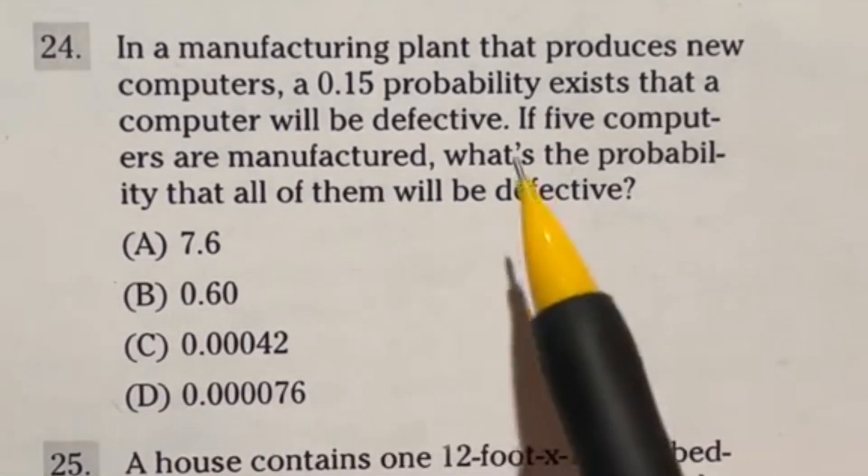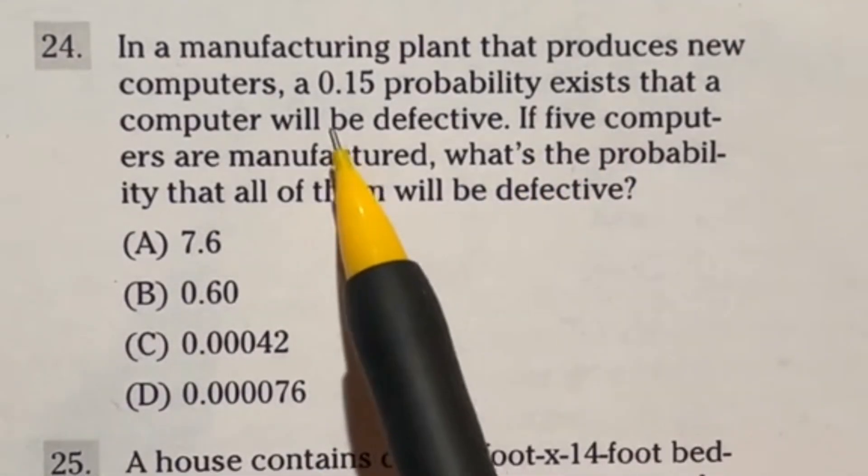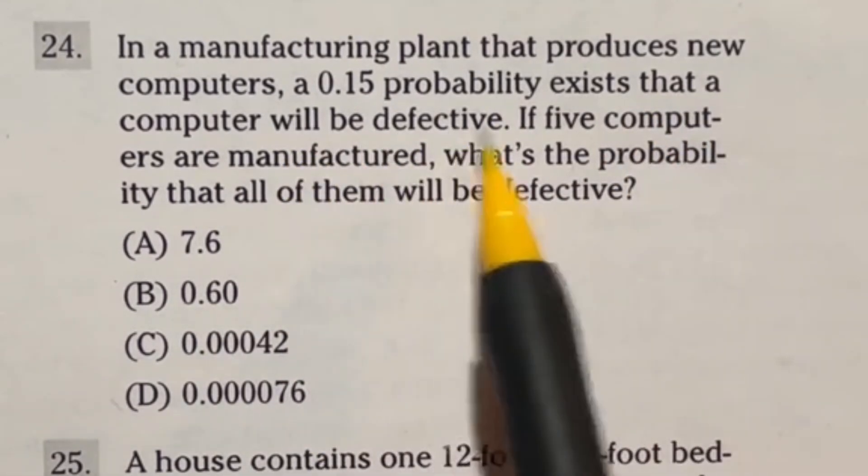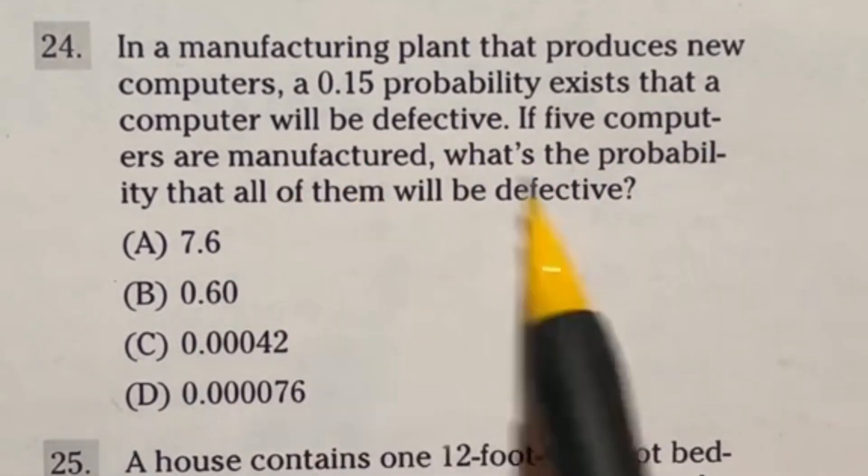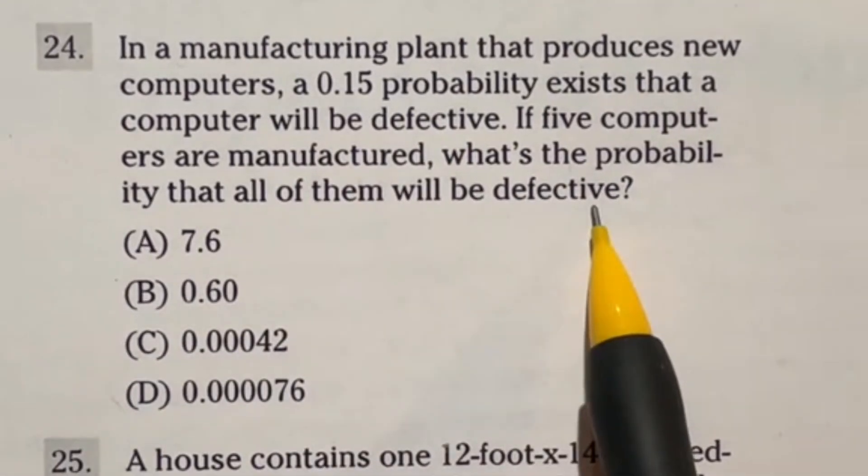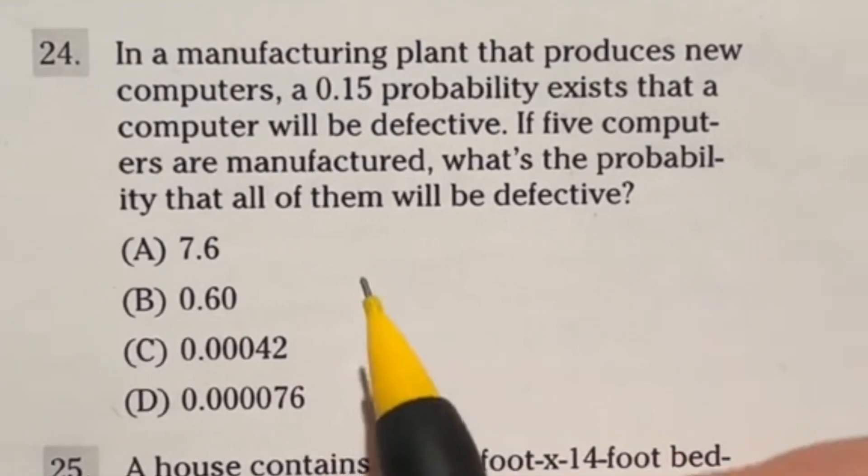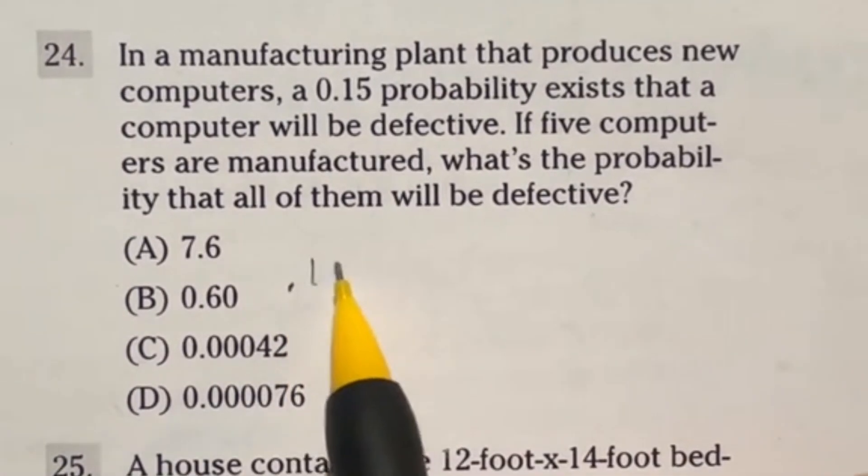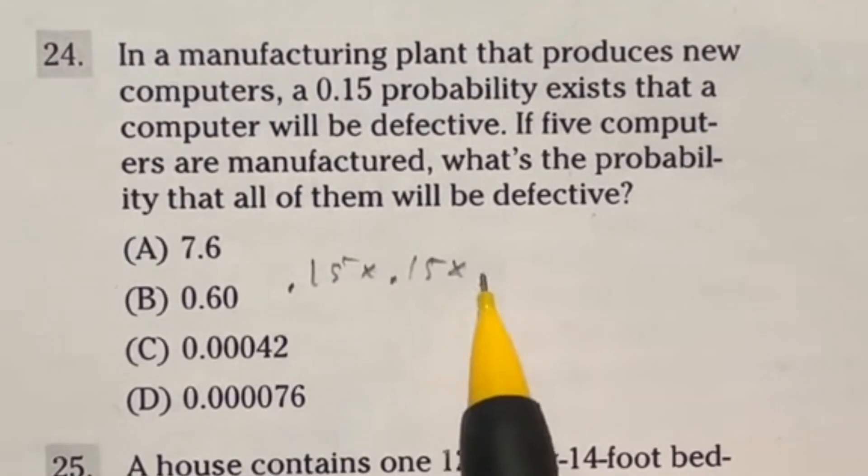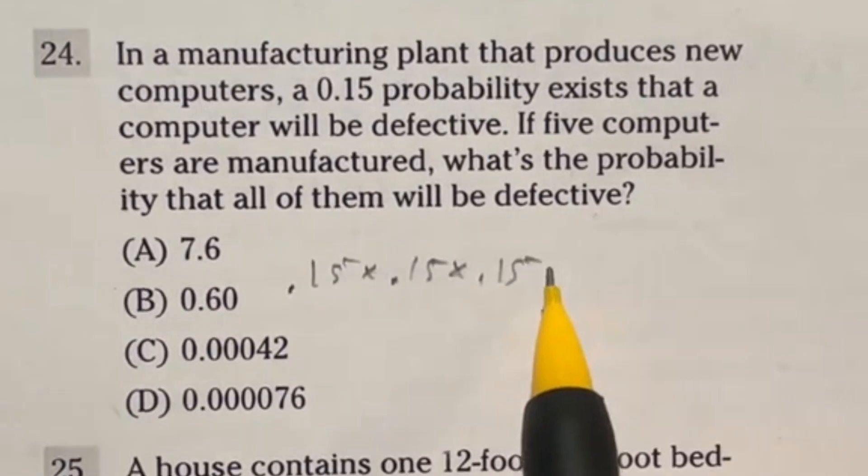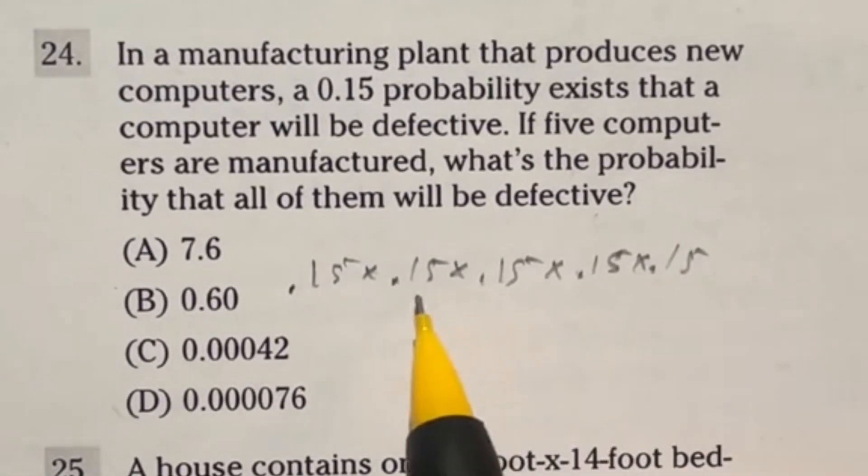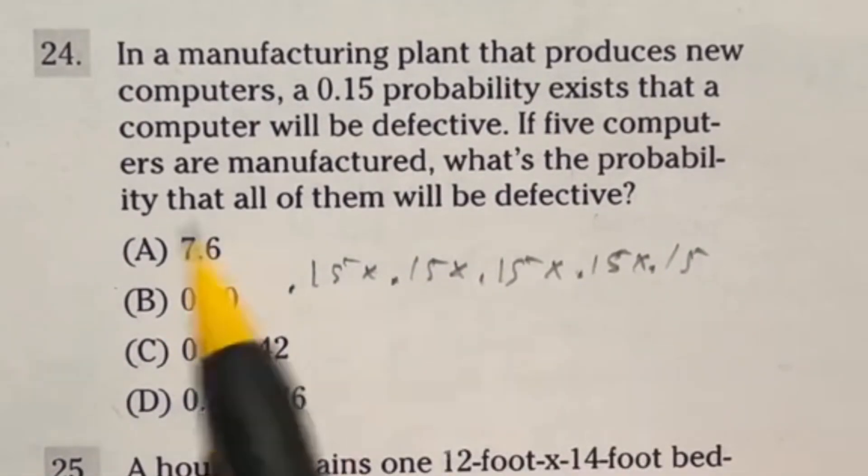Number 24 says in a manufacturing plant that produces new computers, there is a 0.15 or 15% probability exists that a computer will be defective. If 5 computers are manufactured, what's the probability that all of them will be defective? So if you know anything about probability, you would know that you would find the probability of all five of these being defective by taking the probability of each one of them, 0.15, times the probability of the next one, 0.15. And you would actually do this for each one. So there's a total of five of them. And the answer to this will be our final answer.